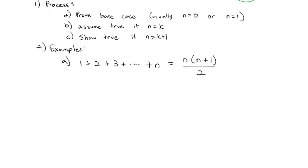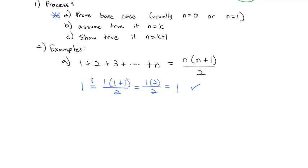First, we have to prove the base case, which just uses the first number. Is 1 equal to — we'll put a question mark — 1 times 1 plus 1 divided by 2? Well, that's just 1 times 2 divided by 2, which reduces to just 1. So yes, the base case: if n is equal to 1, the formula works.